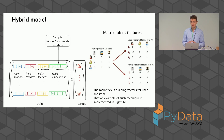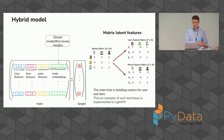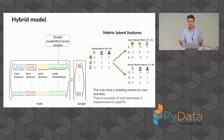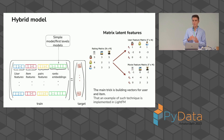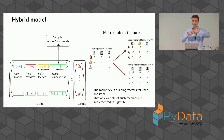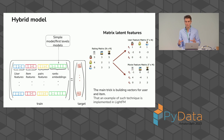The state-of-the-art in industry is a hybrid model, where we combine previous approaches. Usually we use user features, item features, and embeddings or output from simple first-level models, and build a second layer of models. Some companies use five or ten layers of models, where each model generates candidates for the next model — and it can be a very complex system.